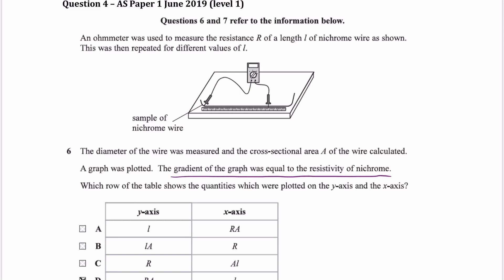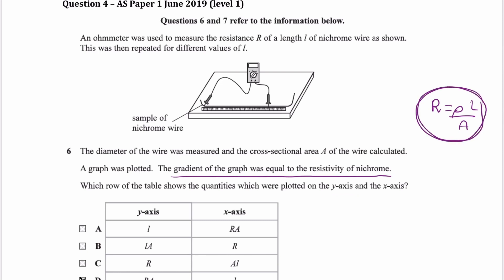The equation we're considering here is resistance — or resistivity rather — where resistance is equal to resistivity times length over area. We know our gradient is rho for the graph that we plot. We're trying to figure out what's going to be on the y-axis and what's going to be on the x-axis, and you can figure that out by thinking about the different ways we can rearrange this equation.